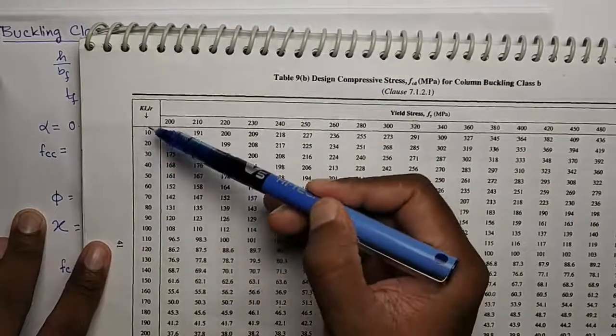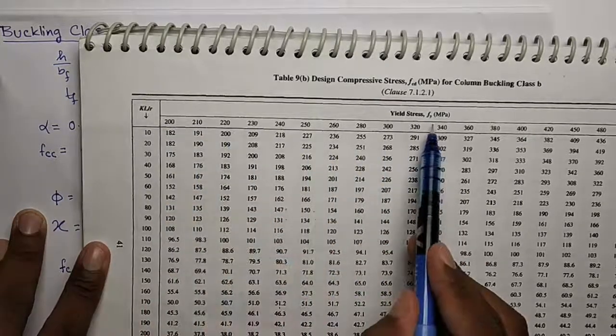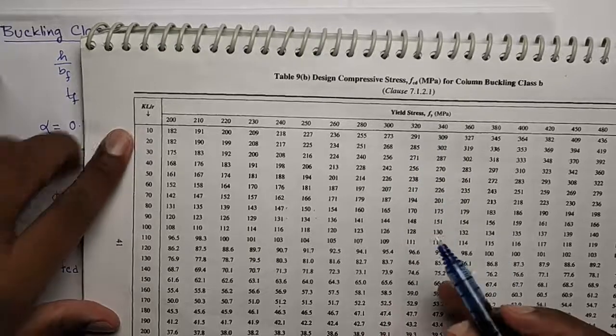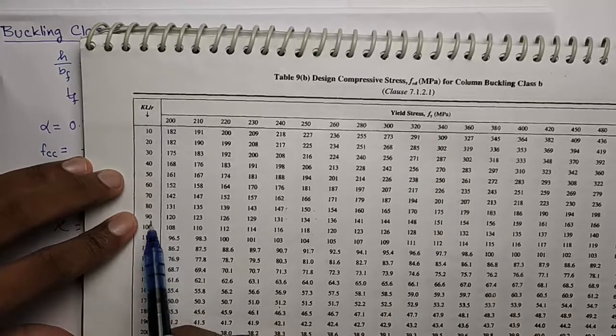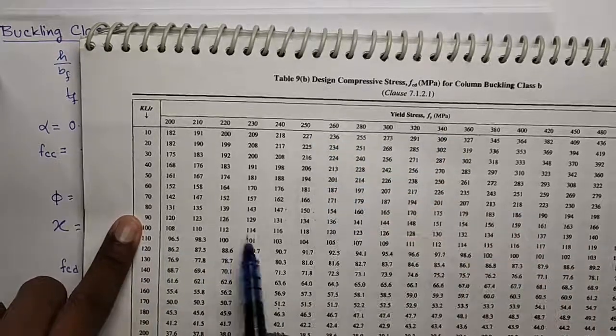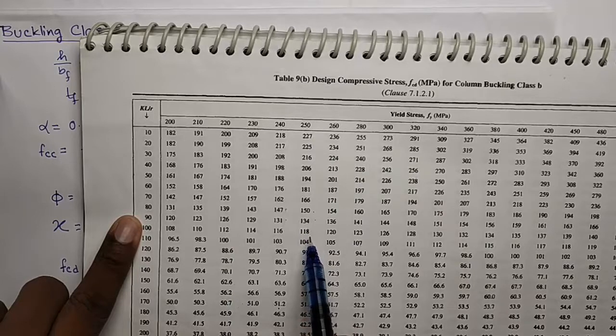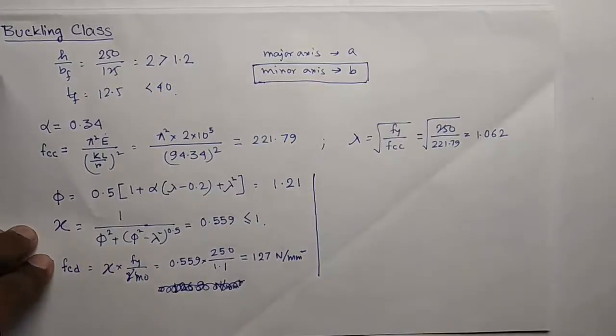The slenderness ratio is given in the first column here and these are the Fy values. So in our case the slenderness ratio is 94.34 which is in between 90 and 100, and the Fy is 250. So the value will be in between 134 and 118. So we have to interpolate.